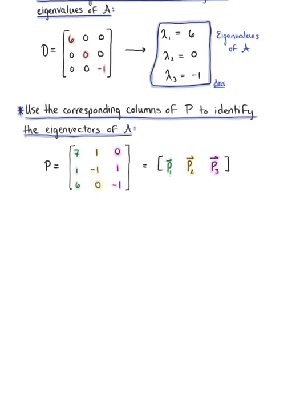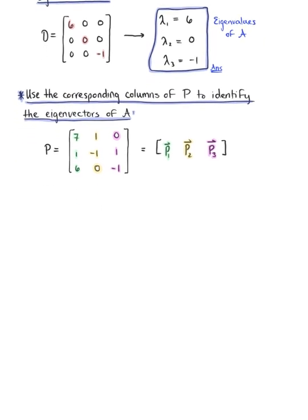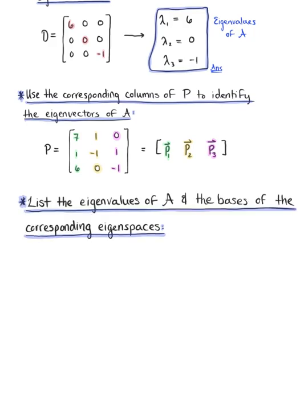Now we want to list the eigenvalues of matrix A and the basis for the corresponding eigenspaces, keeping in mind that the eigenvectors represent the basis vectors for each eigenspace.